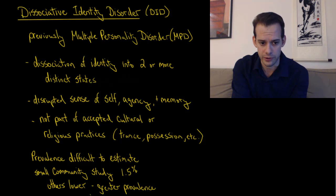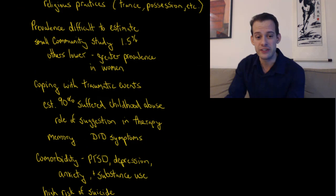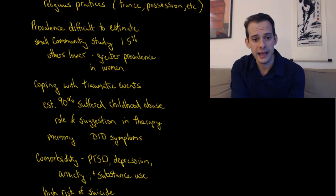The prevalence is difficult to estimate for this. The DSM-5 refers to a small community study to estimate the prevalence of 1.5%. It's likely much lower, and other studies have suggested much lower prevalence and also greater prevalence in women compared to men.